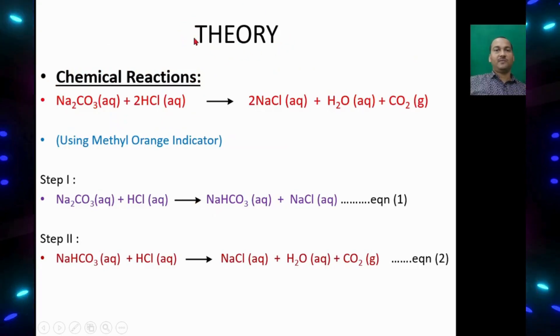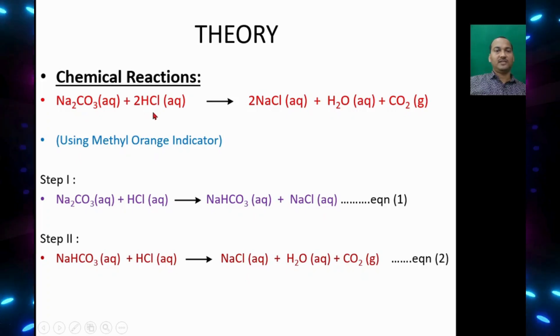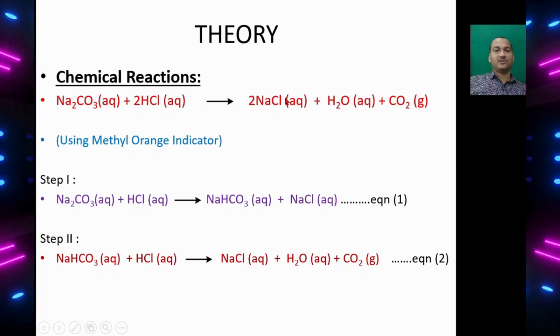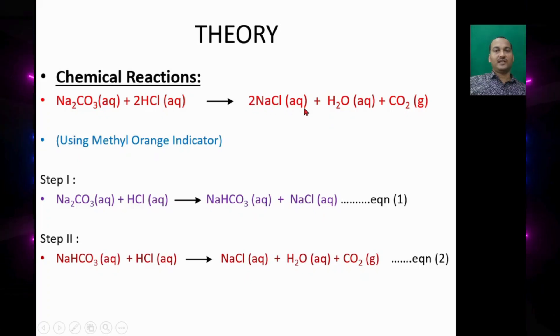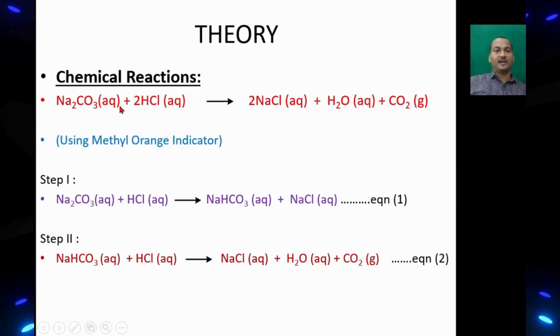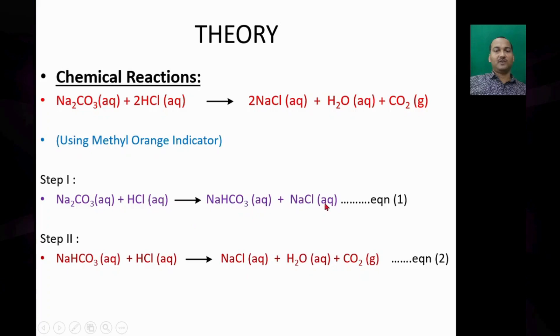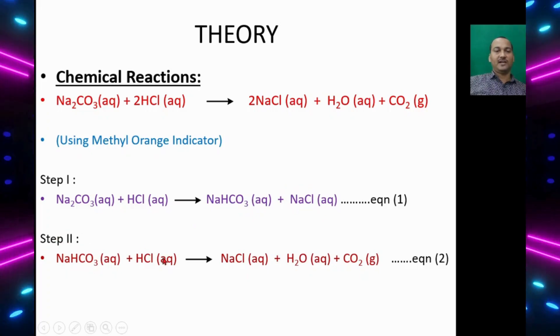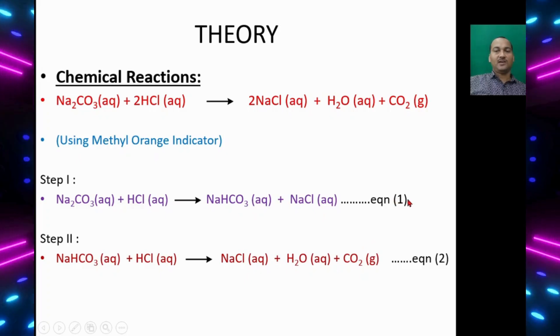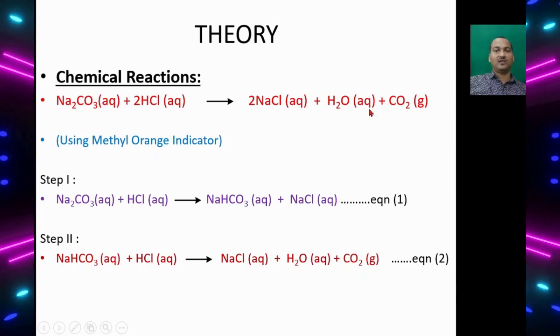Let's talk about the theory or principle behind this titration. Sodium carbonate, the base, reacts with HCl, the acid. Sodium carbonate reacts with two moles of hydrochloric acid giving rise to 2NaCl plus water plus carbon dioxide. This reaction takes place in the presence of indicator methyl orange and occurs in two steps. In first step, sodium carbonate reacts with HCl giving rise to sodium bicarbonate plus NaCl. In second step, sodium bicarbonate reacts with another equivalent of HCl giving rise to NaCl plus water plus carbon dioxide. If we add equations 1 and 2, we get the net reaction: Na2CO3 plus 2HCl giving rise to 2NaCl plus water plus CO2.